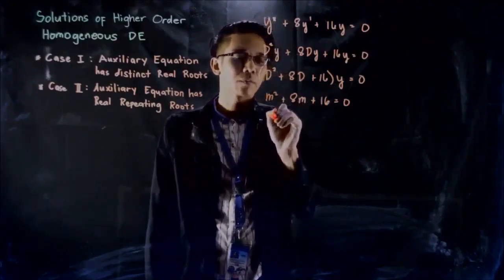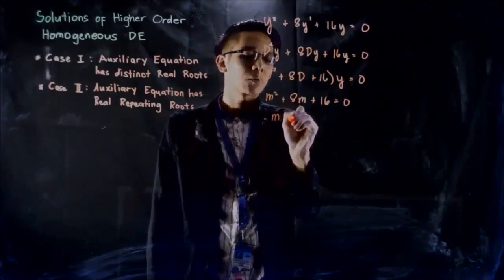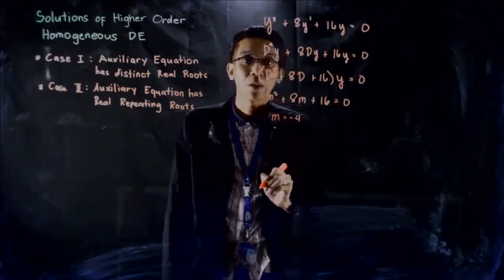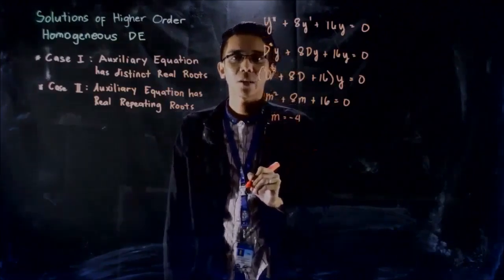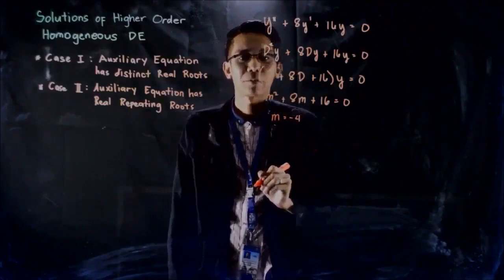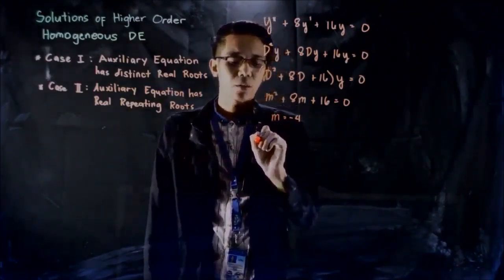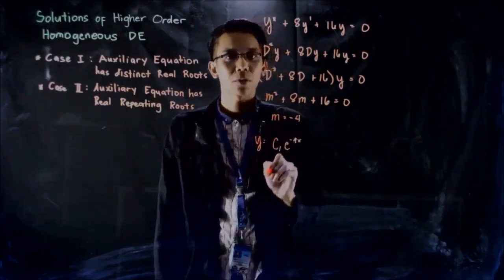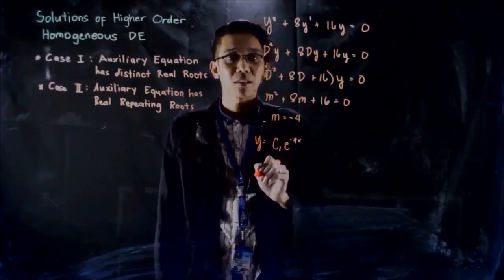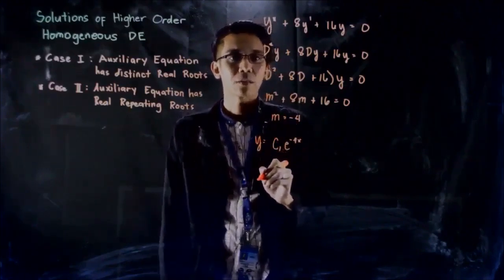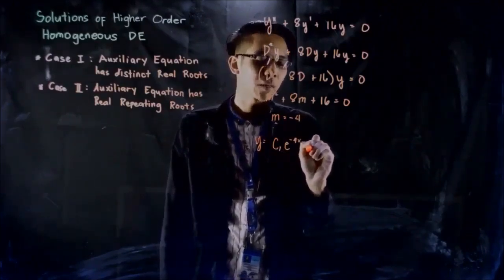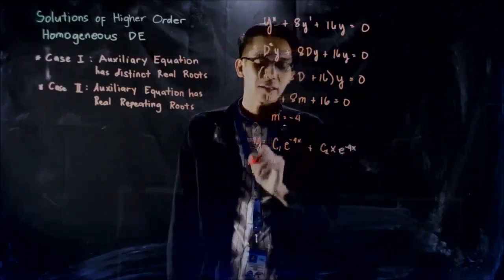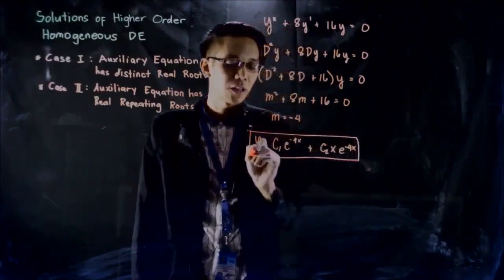Solving for the values of m, we find m equals negative 4 with a multiplicity of 2. The roots are real; however, they are repeating. So the solution is y equals c₁e^(−4x). For every root that repeats, we add the variable x. Since negative 4 repeats once, the second term is plus c₂xe^(−4x). This is the solution of the given differential equation.